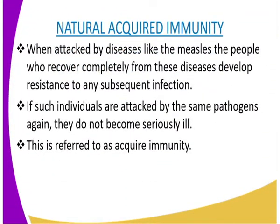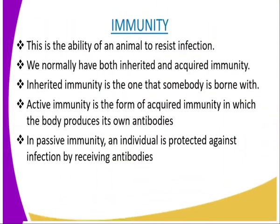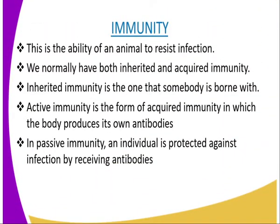Acquired immunity can be active or passive in nature. Active immunity is the form of acquired immunity in which the body produces its own antibodies against infection, while passive immunity is a form of acquired immunity in which an individual is protected against infection by receiving antibodies. As the term passive suggests, the body is not stimulated to release antibodies of its own.